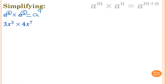3x power of 3 times 4x to the power of 7. So what we do: 3 times 4 is equal to 12. And then x power of 3 times x to the power of 7, which is 3 plus 7 equals 10. So 12x to the power of 10.